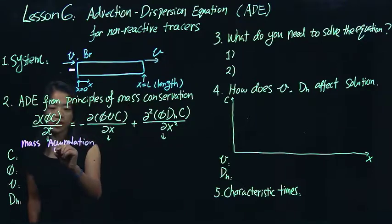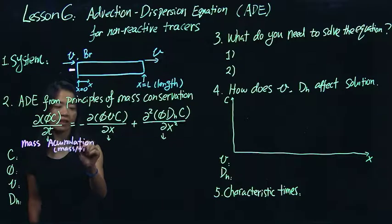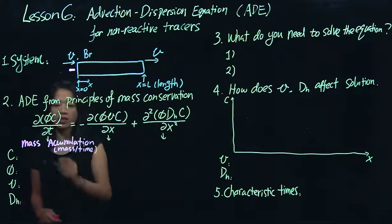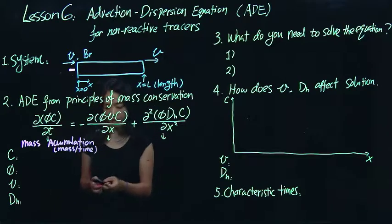And it should have the units of accumulation, like mass per time. It's how fast things are changing, right?